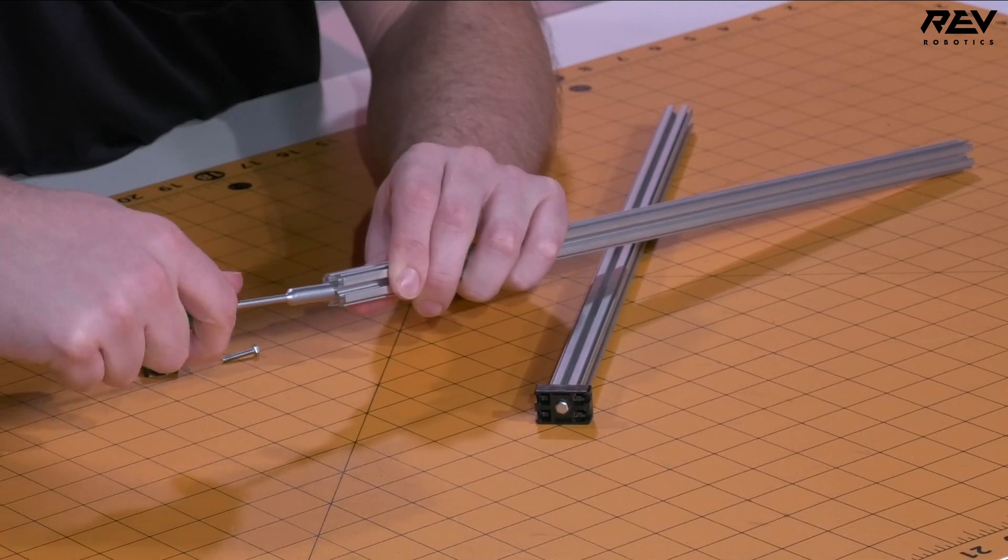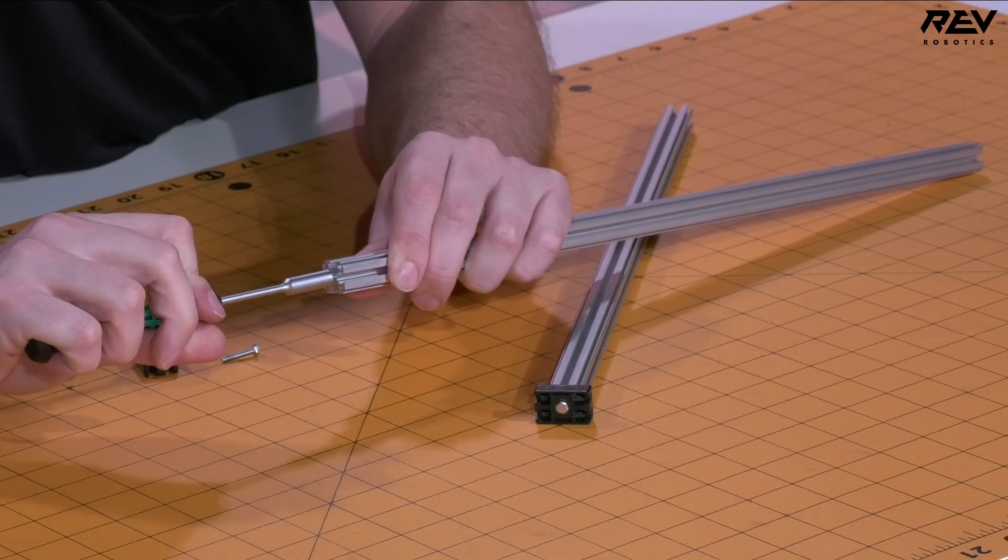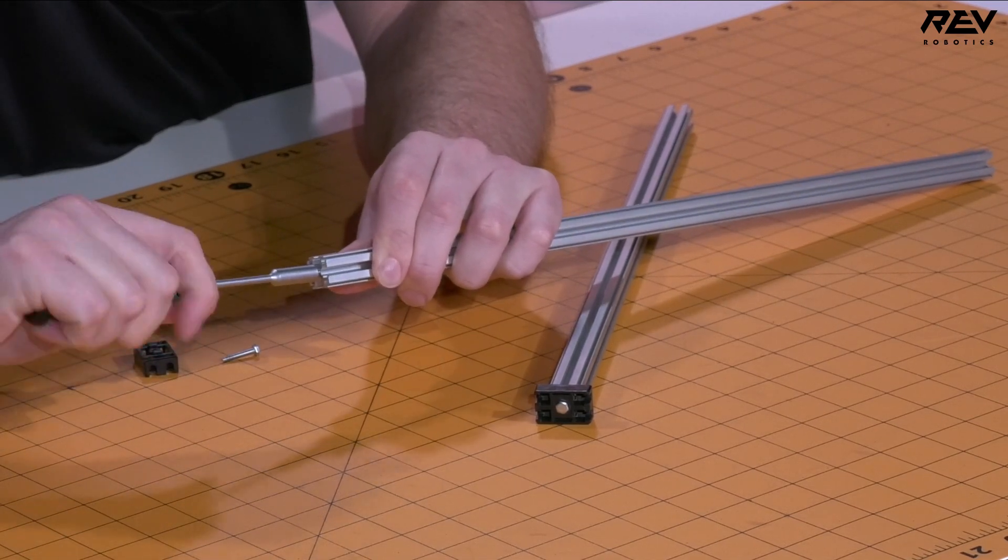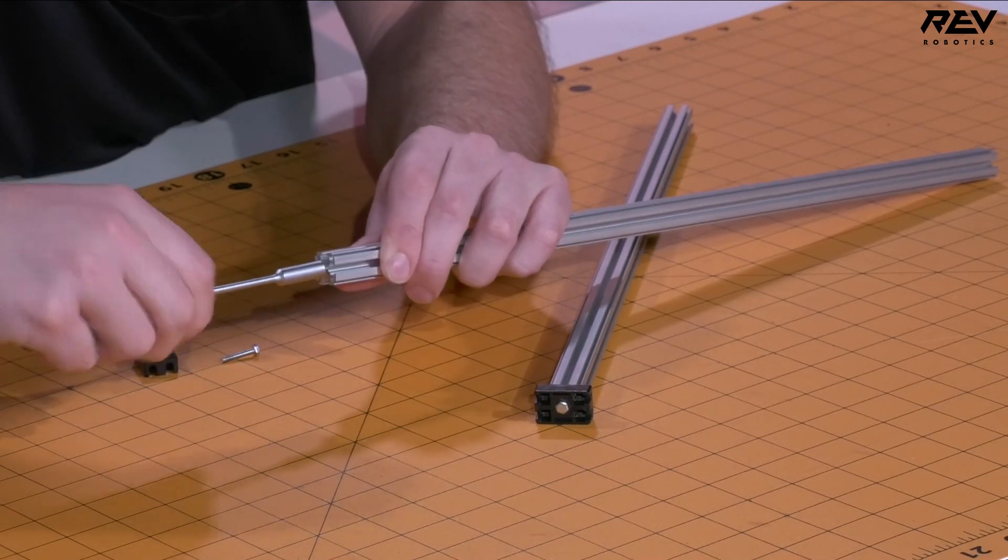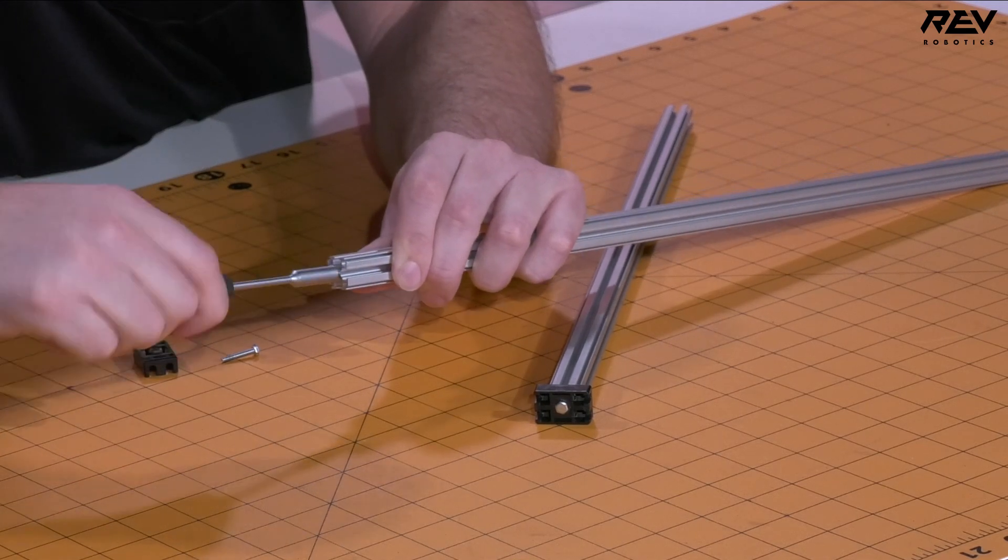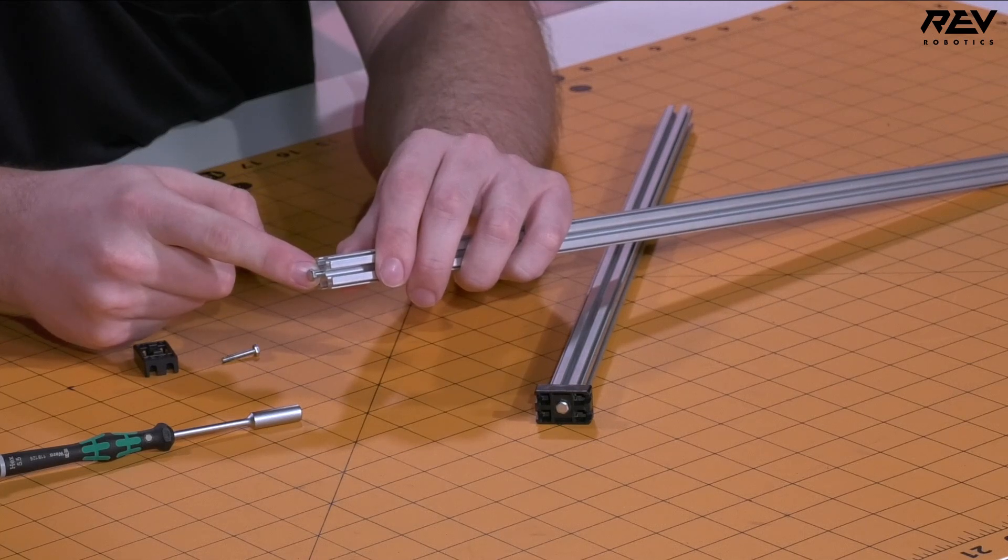So you kind of go in until you start to feel a little bit of resistance and then you can back this out about a half of a turn. You can keep going in about two or three turns and then back out a little bit as well. You can keep repeating this process until the extrusion is completely tapped so your bolt head will be all the way down.